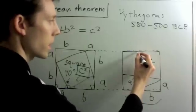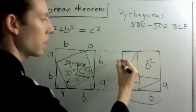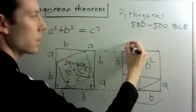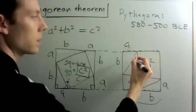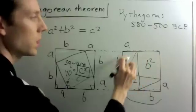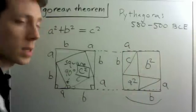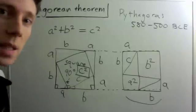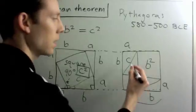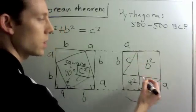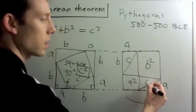This rectangle here — if I draw a diagonal here — this side length is a, this side length is b, so this side length is c. And actually these two triangles are the same as these two triangles here.